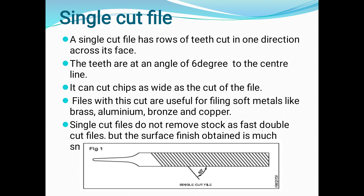The single cut file has rows of teeth cut in one direction. The angle is 60 degrees to the center line. It can cut chips as wide as the cut of the file. Single cut files are used for soft metals such as brass, aluminum, bronze, and copper.